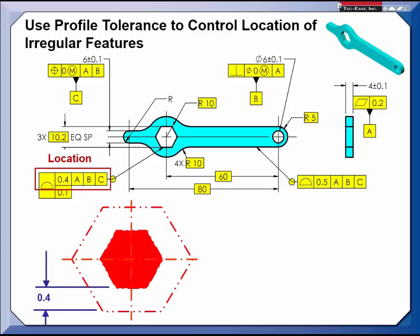The feature must be located within the 0.4 wide tolerance zone shown. This tolerance zone establishes an inner boundary of 9.8 and an outer boundary of 10.6.